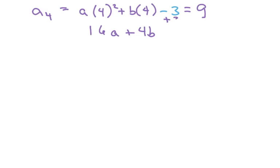Okay, the next one I'm going to use is a sub 4. That means everywhere there's an n I'm putting in 4. So we have a times 4 squared plus b times 4 plus c. And my c was negative 3. So I'm going to go ahead and write that in. Minus 3 equals, and a sub 4 was 9. So we get 16a plus 4b, and I'm going to go ahead and add the 3 to both sides, equals 12. And if I divide everything by 4, simplify this, I get 4a plus b equals 3.